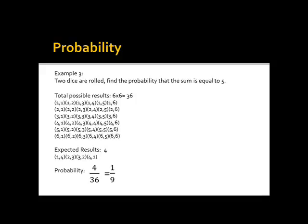Third example. Two dies are rolled. Find the probability that the sum is equal to 5. In this problem, the total possible results is equal to 36, because in the first die there are 6 ways, and in the second die there are also 6 ways. So 6 times 6 is equal to 36.